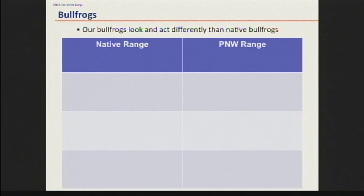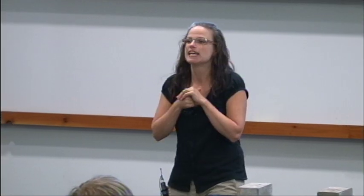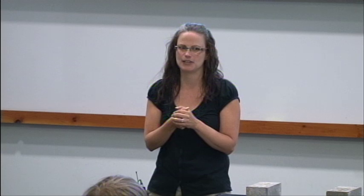Why do we care? In the Pacific Northwest, our bullfrogs are starting to act and look a little bit different than the bullfrogs back in the native range — and that's what makes this interesting to me. Back in the native range, they breed in permanent ponds — water that does not dry up — because they overwinter. Sometimes it can take three years for these tadpoles to metamorphose. Here, we find them in permanent habitats, but we're also finding them in seasonal habitats — wetlands that dry up at the end of the summer.